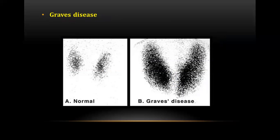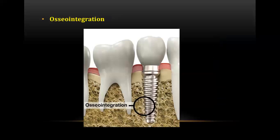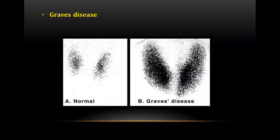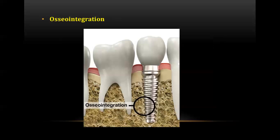The next question showed a thyroid scan of Graves' disease. Graves' disease is the most common cause of endogenous hyperthyroidism, with peak incidence seen in women — females are affected five times more than males, and women are most commonly between 30 to 60 years of age. It is an autoimmune disease in which thyroid-stimulating antibody is unique to Graves' disease.